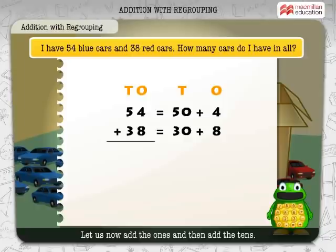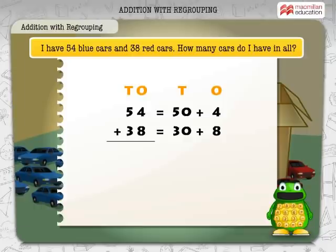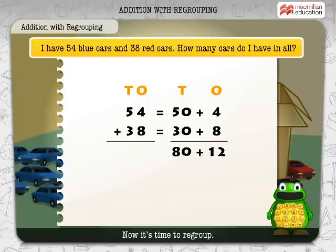Let us now add the ones and then add the tens. 4 plus 8 equals 12, and 50 plus 30 equals 80. Now, it's time to regroup.